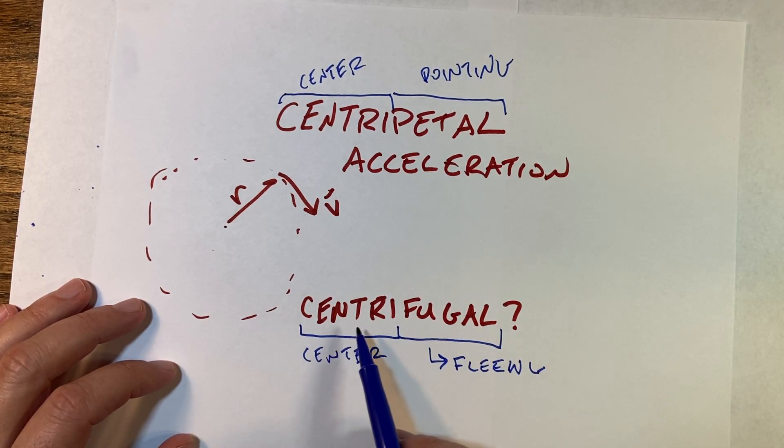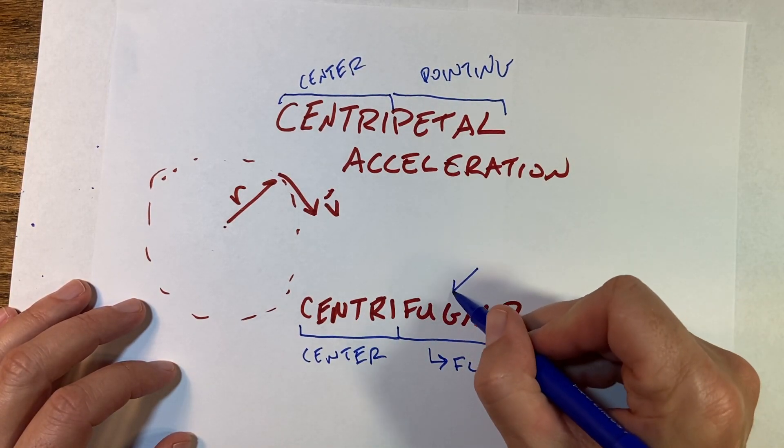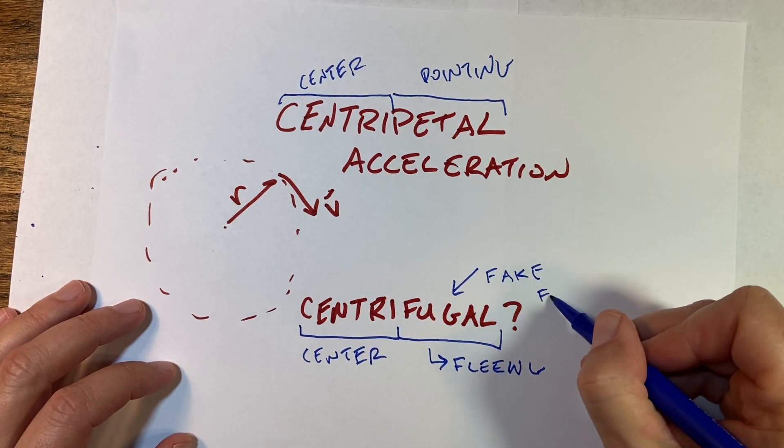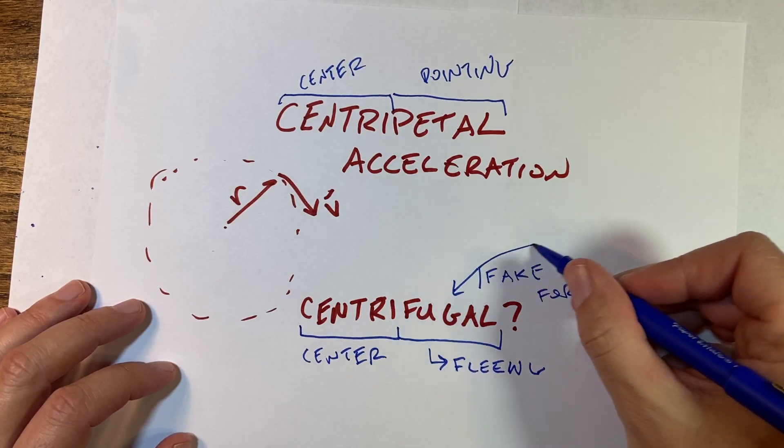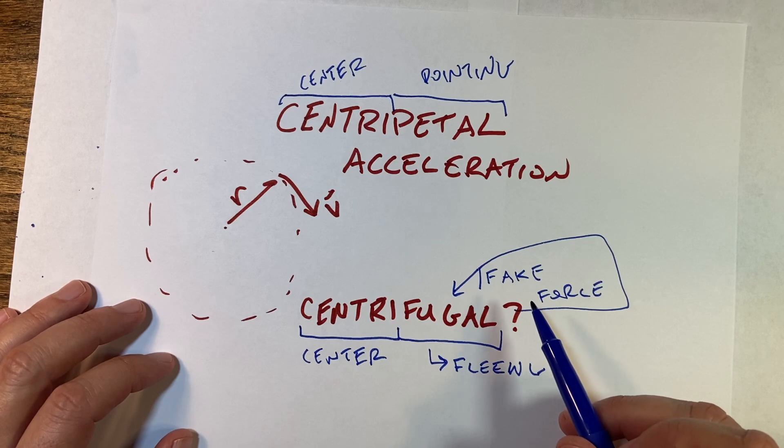So this is center fleeing force. This is a force pointing away from the circle. This is technically called a fake force. I just want to point that out. We're not going to go over it right now. I'll cover it later. A fake force is a force we put in an accelerating reference frame to make things work. It's not a real interaction.